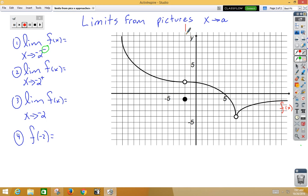We're going to imagine a wall at negative 2. And as we approach that wall from the left side, we're looking for a y value because limits are always y values. When we get to negative 2, regardless of the open circle, notice that our y value is positive 2.